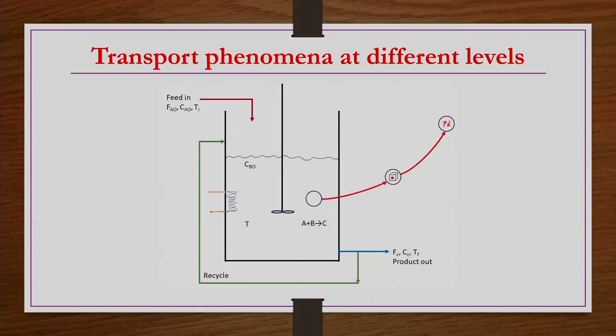Transport phenomena occur at three different levels: macroscopic, microscopic, and molecular. Consider a reactor system where reactant B is present and reactant A is continuously added. The reactor has a heating element and stirring provision so that the reaction between A and B produces product C. Product C is separated from the product stream, and unreacted A and B are recycled back.